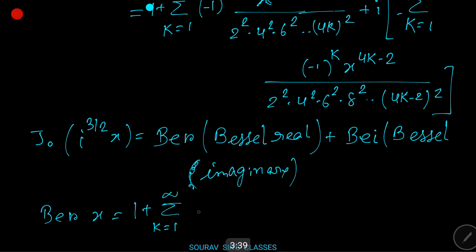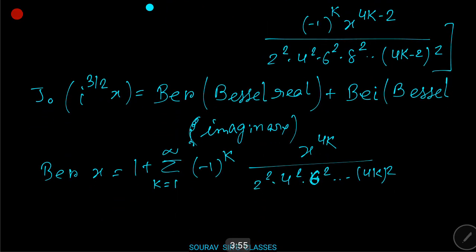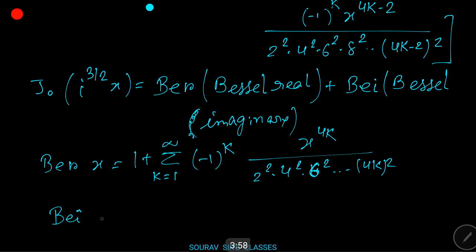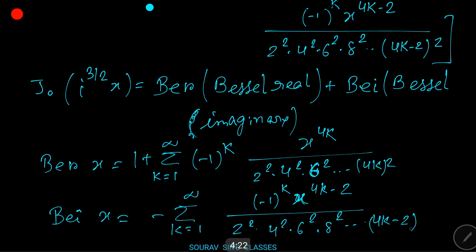Therefore ber(x) = 1 + summation k=1 to ∞ of [(-1)^k · x^(4k)] / [2² · 4² · 6² · ... · (4k)²], and bei(x) = -summation k=1 to ∞ of [(-1)^k · x^(4k-2)] / [2² · 4² · 6² · ... · (4k-2)²].